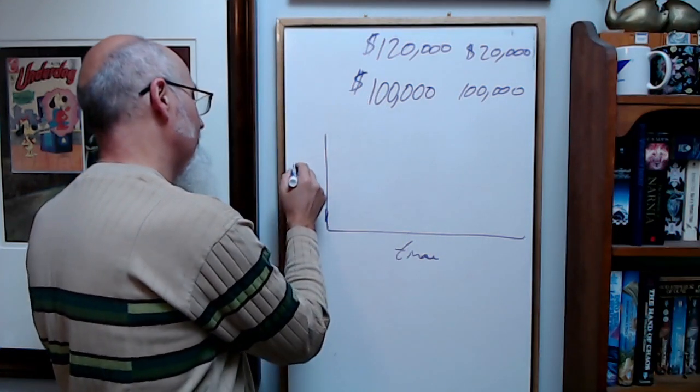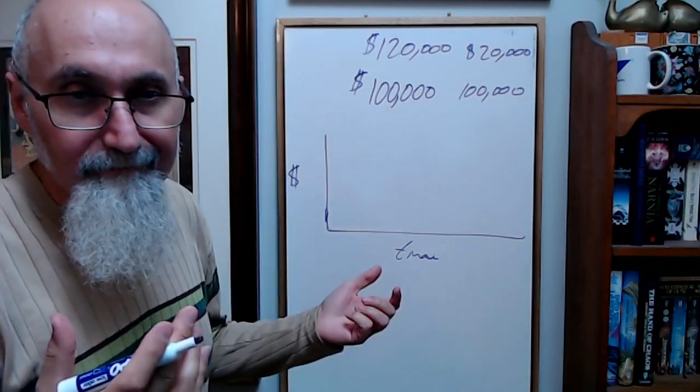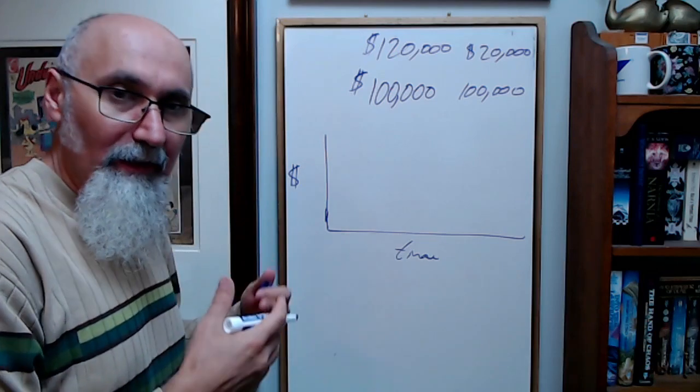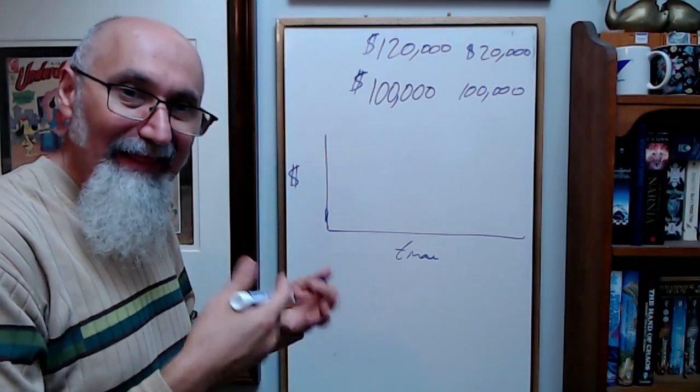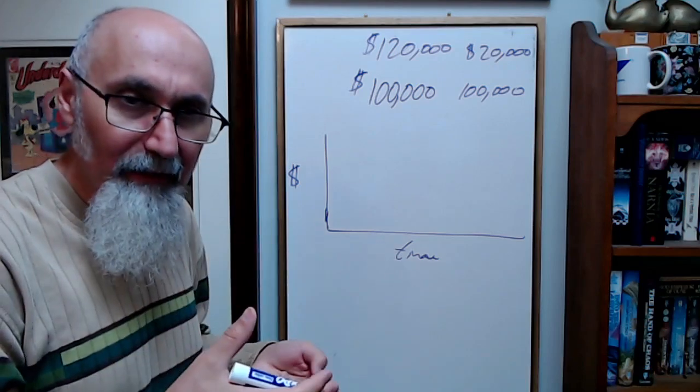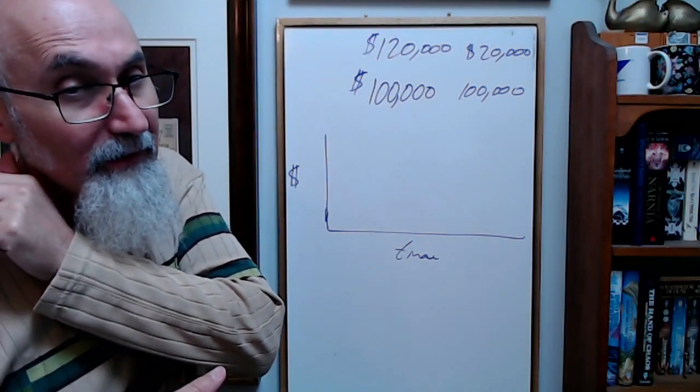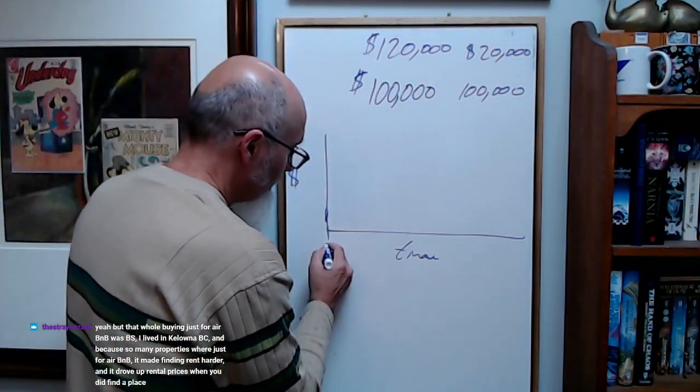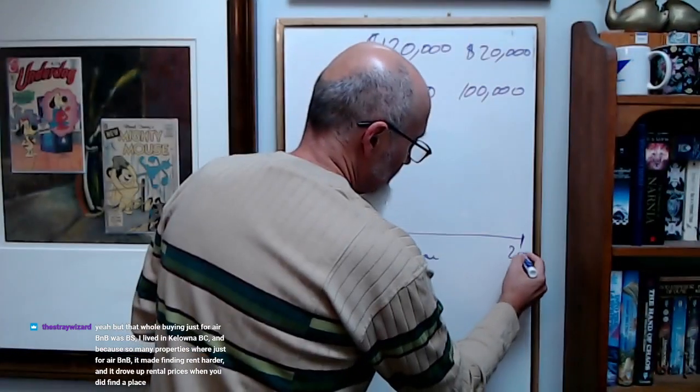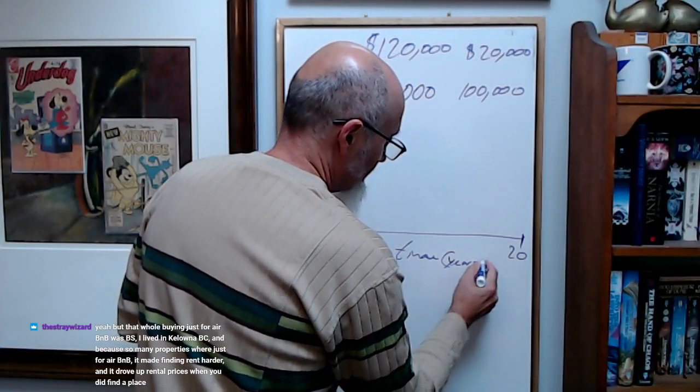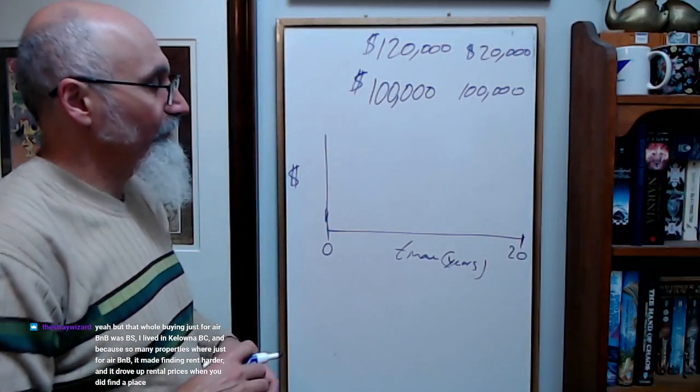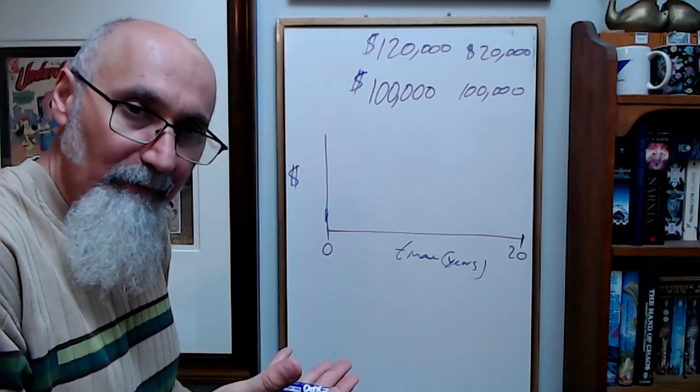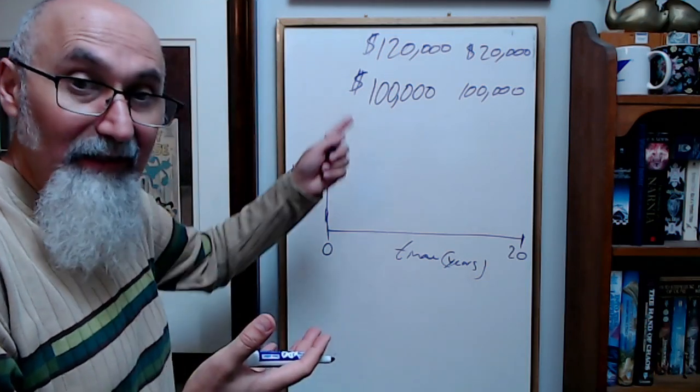This is money. On a hundred thousand dollars, depending on what type of mortgage you get, how long the duration is and all that jazz, you're gonna be paying on a monthly basis a certain amount of money to pay off your mortgage. Simple calculation. Let's say you're doing your term for 20 years, 20 years.